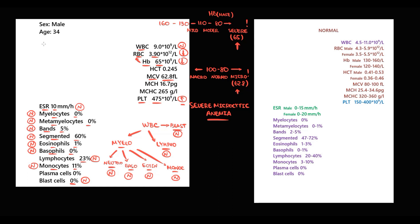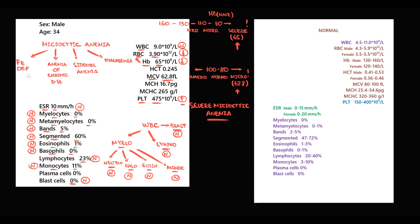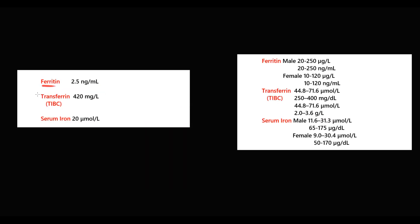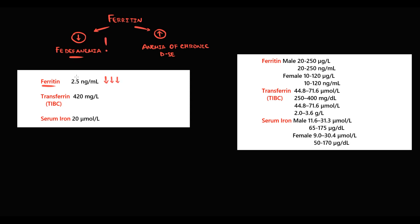Now we have to determine the type of microcytic anemia. There are four possibilities: iron deficiency anemia, anemia of chronic disease, sideroblastic anemia, and thalassemia. The two most common are iron deficiency anemia and anemia of chronic disease. To distinguish between these two, we determine ferritin — ferritin should be low in iron deficiency and elevated in anemia of chronic disease. In this case ferritin is very, very low, so it is iron deficiency anemia.